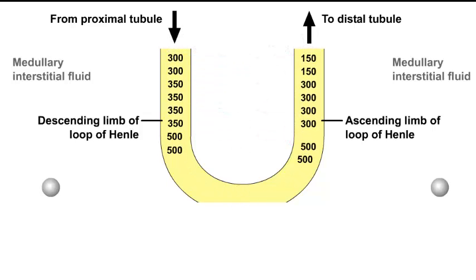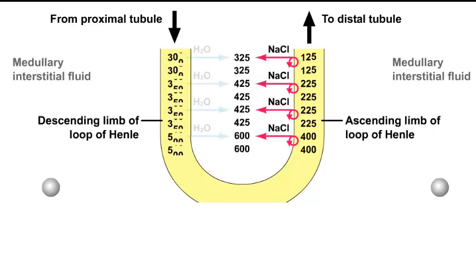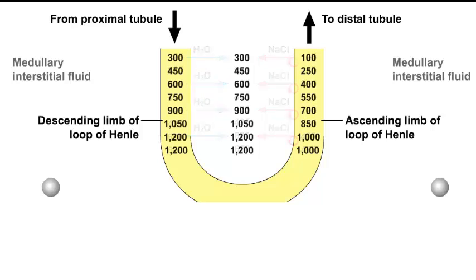As the tubular fluid advances still further, the gradient is disrupted once again at all levels. Again, active extrusion of sodium chloride from the ascending limb coupled with the net diffusion of water out of the descending limb re-establishes the 200 MOSM per liter gradient at all levels.